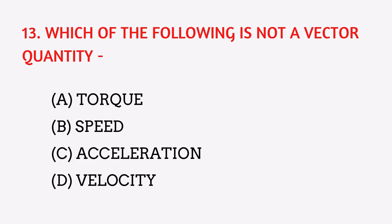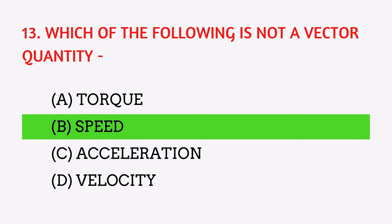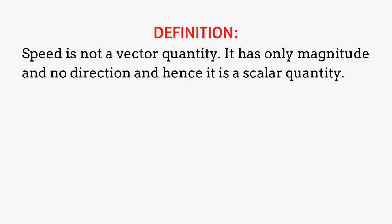Which of the following is not a vector quantity? The answer is speed. Speed is not a vector quantity — it has only magnitude and no direction, and hence it is a scalar quantity.